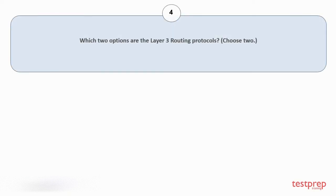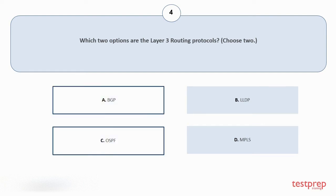Question number 4, Which 2 options are the layer 3 routing protocols? Choose 2. Your options are: BGP, LLDP, OSPF, MPLS. The correct answers are option a and c.